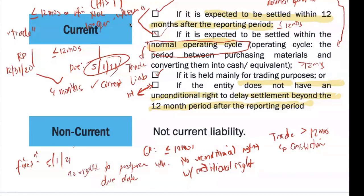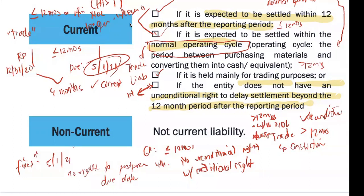Take note of the four items on when we classify a liability as current: expected to be settled within 12 months, within the normal operating cycle, held for trading purposes, or you do not have an unconditional right to delay settlement. If none of these apply — more than 12 months, not within normal operating cycle, not for trading, or you have an unconditional right — it is treated as a non-current liability.